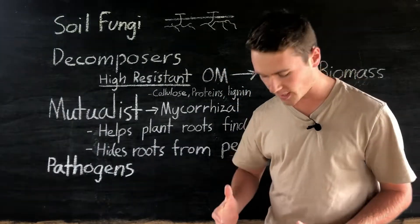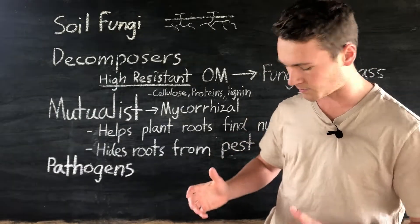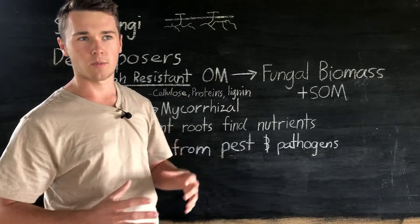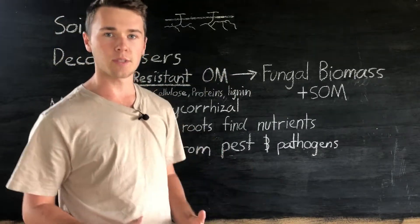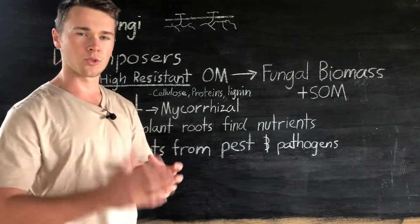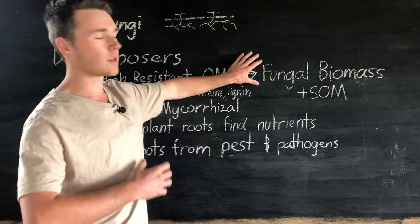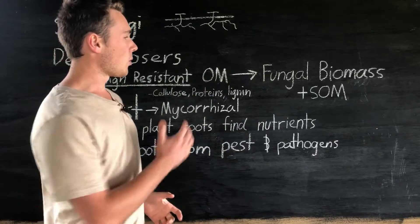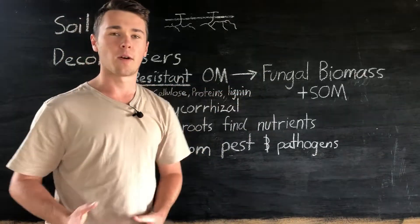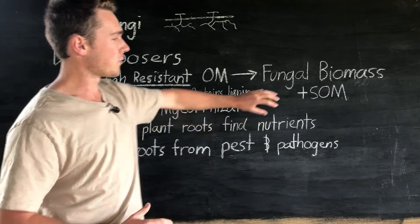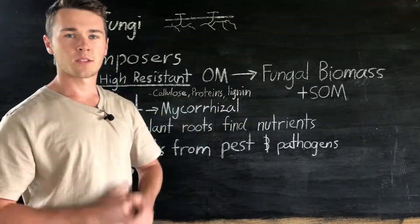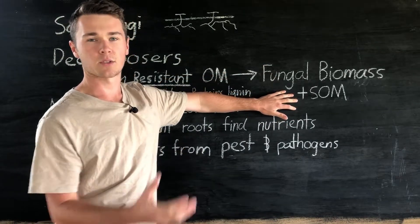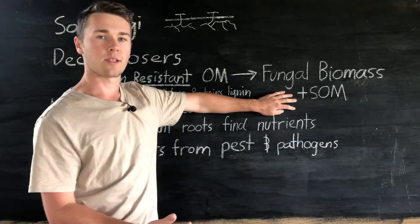Fungi will break down these woody, hard-to-decompose substances and convert them into fungal biomass — they eat it and grow their own bodies, essentially locking those nutrients away. This is important so we don't lose our nutrients, and fungi also form soil organic matter, which is really beneficial for our soil. We're storing nutrients in our soil as well as building up soil structure through increasing soil organic matter and soil organic carbon.